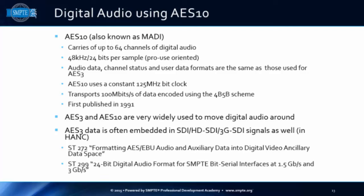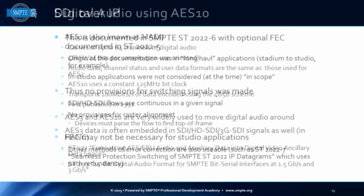For television applications, AES-3 data is typically embedded. When you've got SDI, HD-SDI, or 3G-SDI, you almost always have audio embedded as well. We made provisions for that in ST 272, which was the first embedding standard, and ST 299 that came along later to document both 24-bit sample depth and the wider space in horizontal blanking areas in HD signals. So you carry a lot more audio in HD than you could in SD.